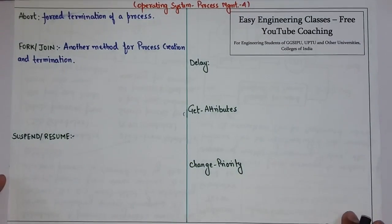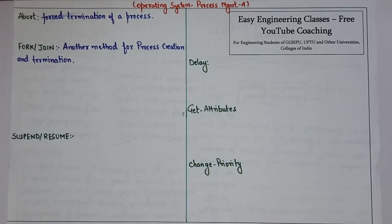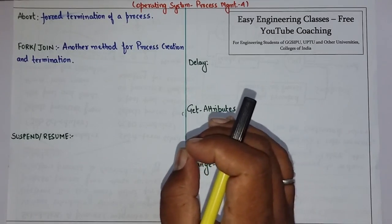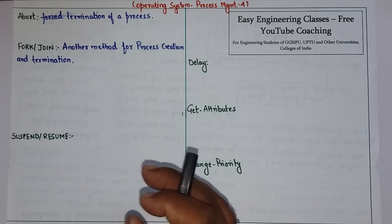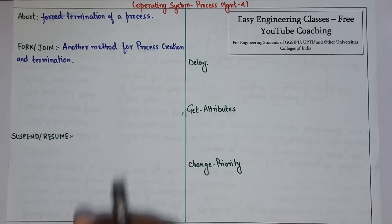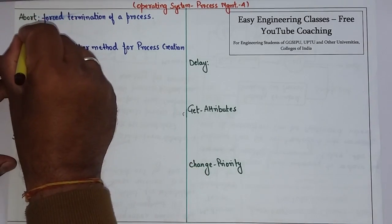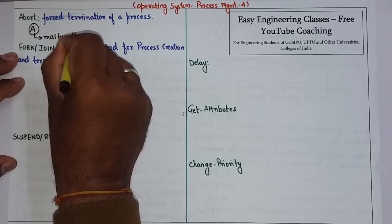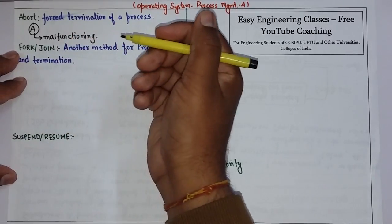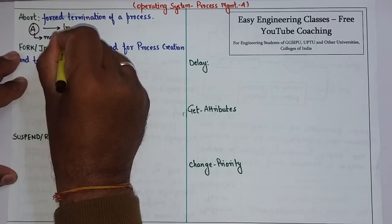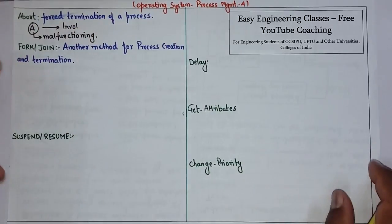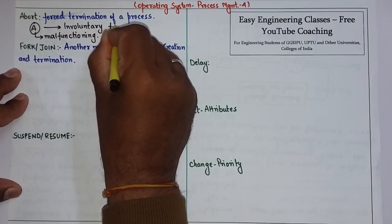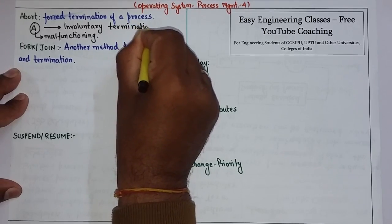Other than creation and termination, there are additional process services. The first is Abort. Abort is the forced termination of a process. It is allowed for a process to terminate or abort itself, but the most frequent use of abort is for involuntary termination. For example, if a process A is malfunctioning or consuming so many resources that the system is going to halt, then process A can be involuntarily terminated with the Abort system call.